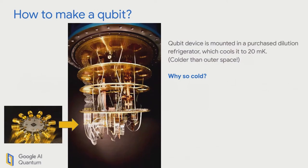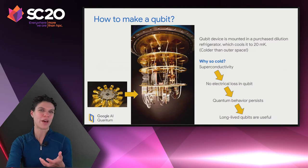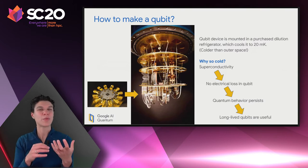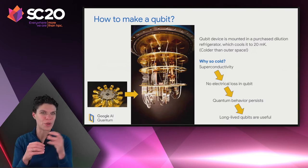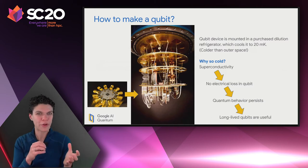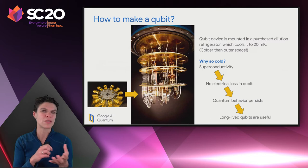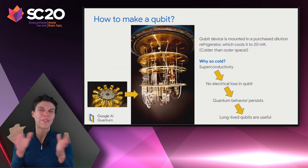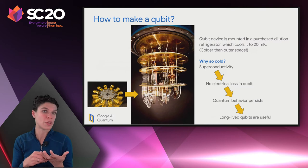We pattern these structures out of aluminum on a silicon substrate, mount them to the base of a dilution refrigerator, and cool them down to 20 millikelvin — colder than outer space. Why does it need to be so cold? At a high level, two reasons. One is to have superconductivity — a superconducting circuit means no electrical loss will happen in the qubit. The energy stored inside is stored by a sloshing current, and as long as the current can flow free of loss, quantum behavior will persist for a long time. If the qubit were lossy, the energy would scatter out very quickly.